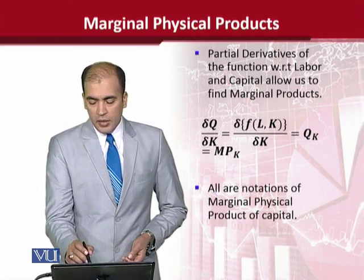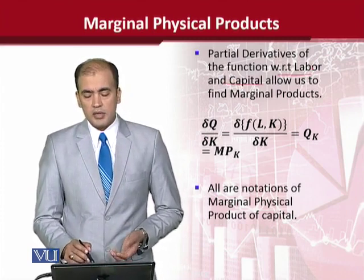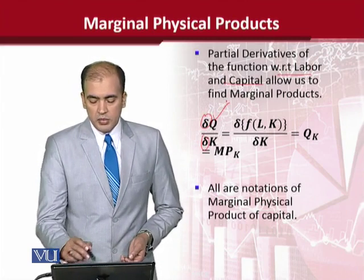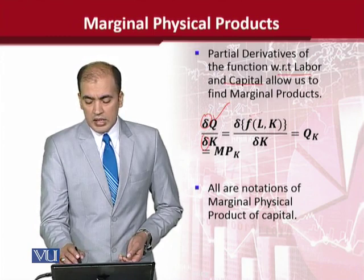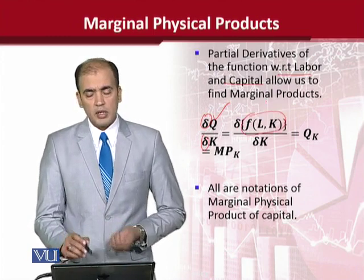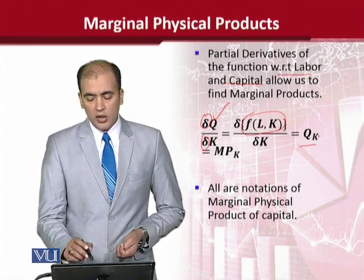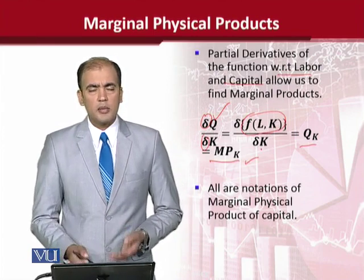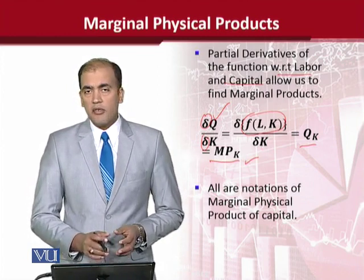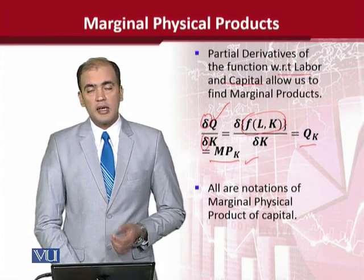With respect to capital or labor we can calculate partial derivatives — the partial version which uses the delta notation. You can see that we have written a more detailed expression of how the function is composed: output depends on labor and capital, each with its own notation. This is how we can explain the marginal physical product of labor.